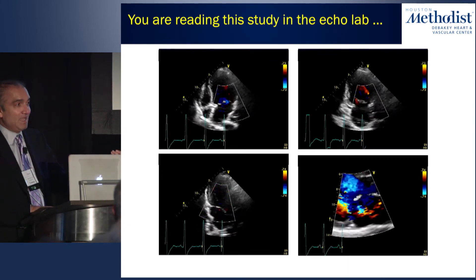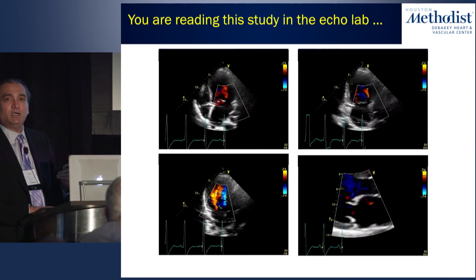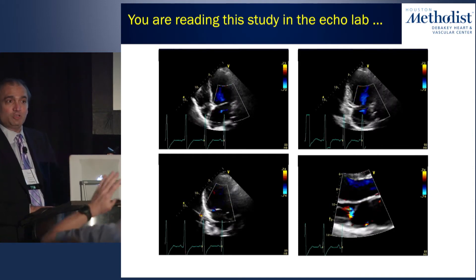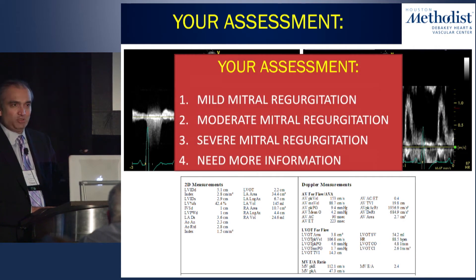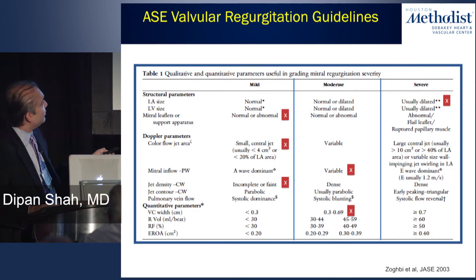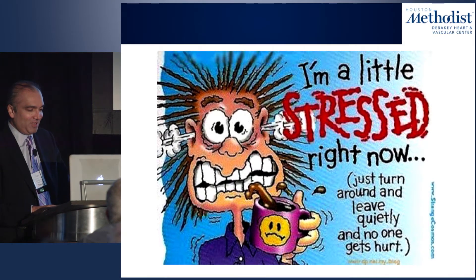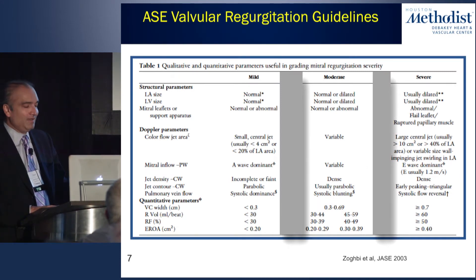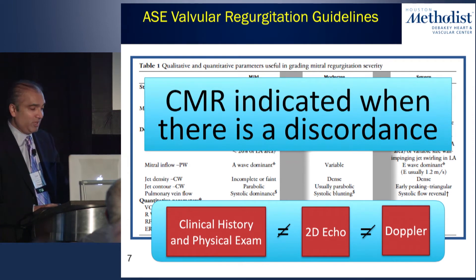That's a valid comment — it was not done in this case. This is an example where, reading the study, how many people are confident saying there's severe MR? This case highlights uncertainty: some parameters — LA size looks enlarged, LV not obviously big, mitral valve leaflet questions, numbers all over the place. PISA is difficult with a very eccentric jet. This is the kind of case where at our institution we would refer for a CMR study.